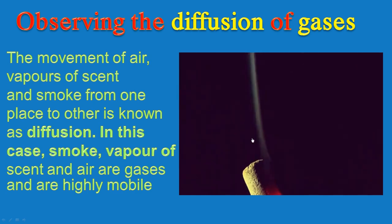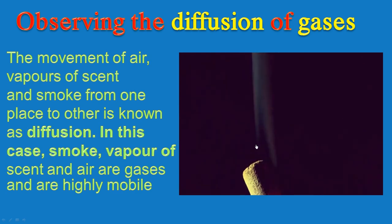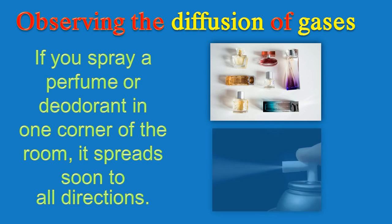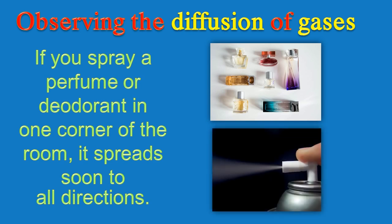Observe the smoke carefully — it is transferring from one place to another. This is known as diffusion. If you spray a perfume or deodorant in one corner of the room, it spreads soon in all directions. That means gases move from one place to another. This is called diffusion.